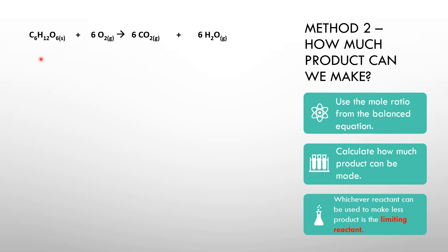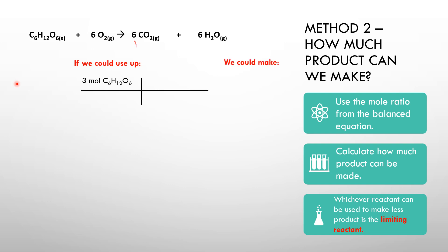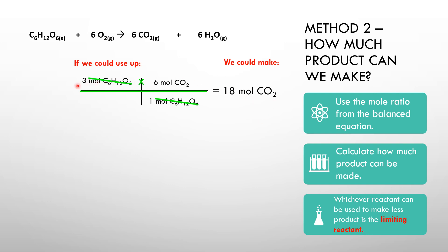We'll start with one of the two reactants and make a T-chart. We'll target carbon dioxide as our product — for each reactant we'll see how much of the same product we could make. Starting with three moles of glucose: from the balanced equation, six moles of CO₂ are formed when one mole of glucose is used up. So if we could use up three moles of glucose, we could make 18 moles of carbon dioxide — three times six equals eighteen.